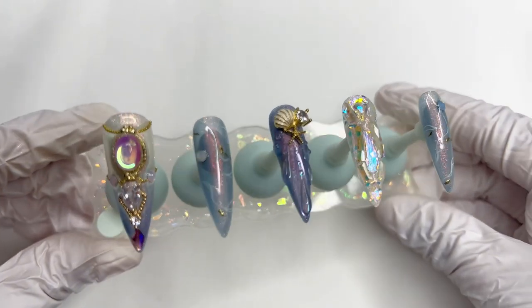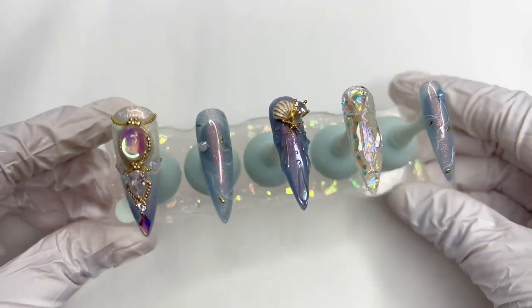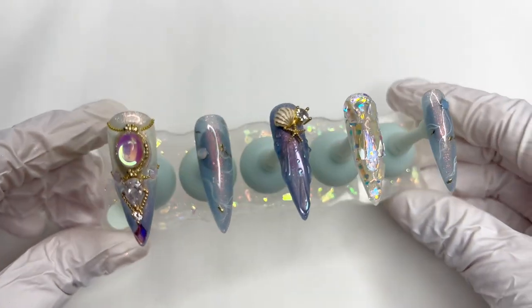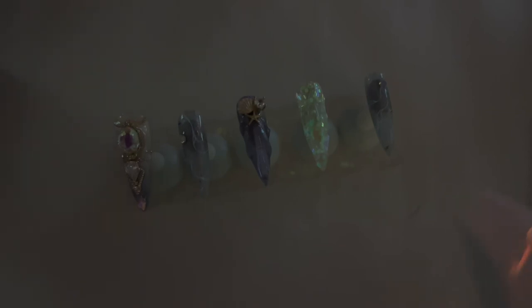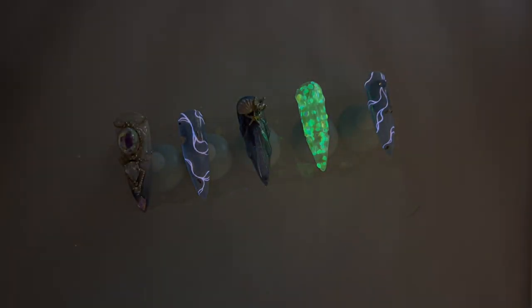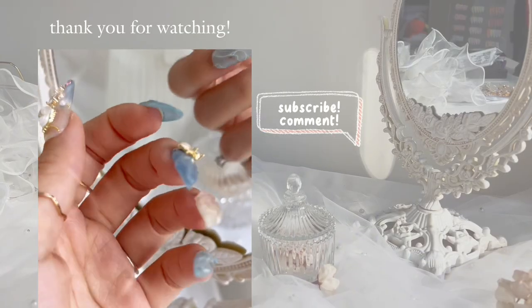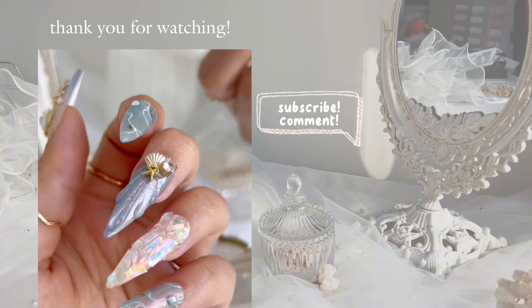And now our mermaid nails are complete. I love how shimmery and sparkly they are without it being too much over the top. And of course, we have to test out the glow. Ta-da! The glow powder turned out really well. Thank you so much for watching. Remember to subscribe and let me know in the comments what else you'd like to see. Bye-bye.